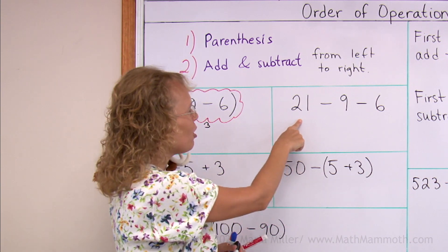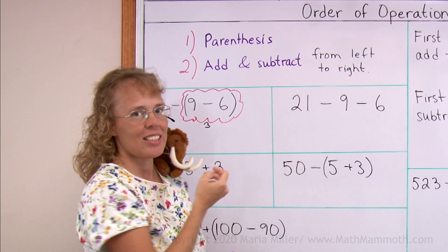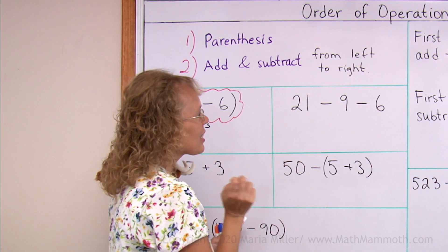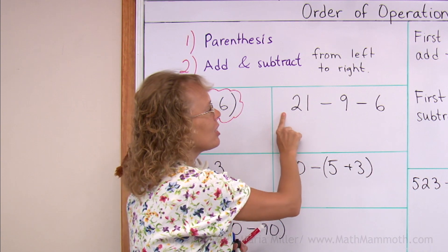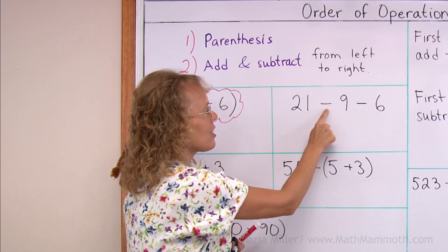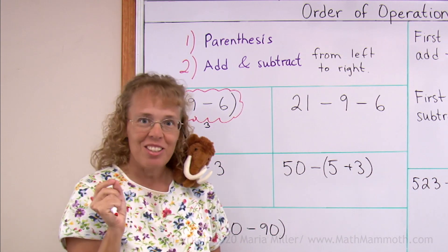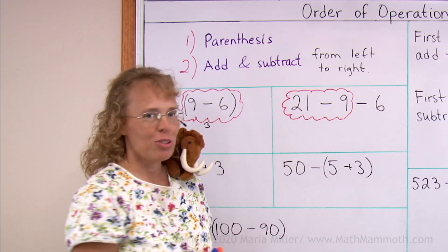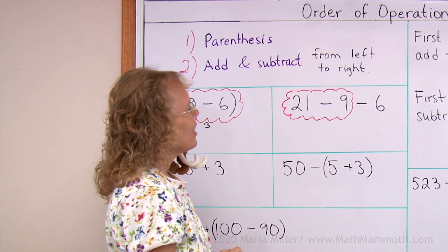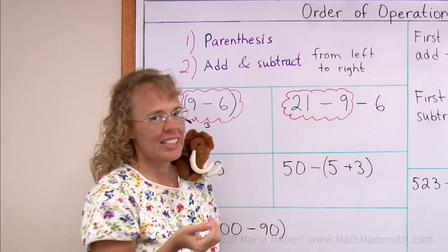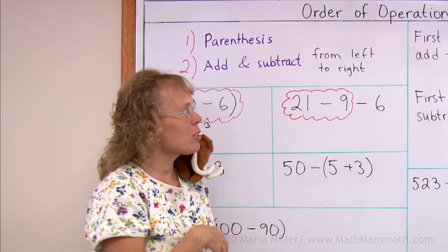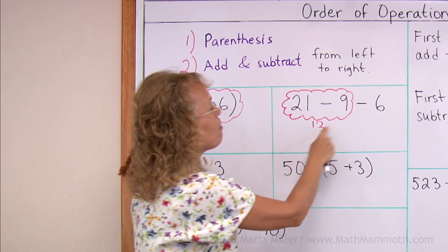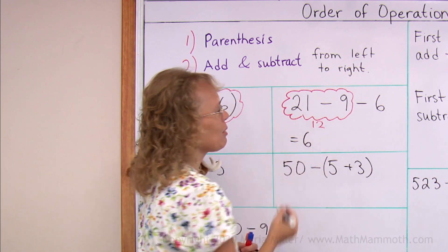And now over here, if you notice, these are the same numbers as in our previous problem, but there are no parentheses. So we will just solve it from left towards the right. We go from here, and this is the first operation to do. I can still draw a bubble if I want to, like this. 21 minus 9 is what we will subtract first. You can subtract 21 minus 10, that would be 11, and then add 1. So we get 12 for this bubble. And then 12 minus 6, and that is 6.